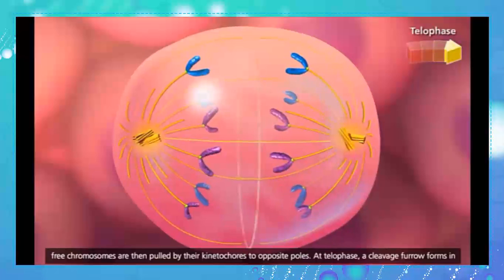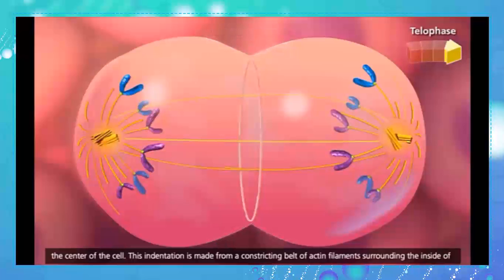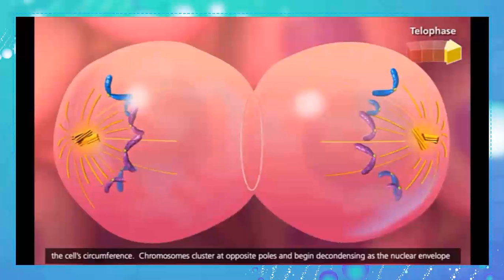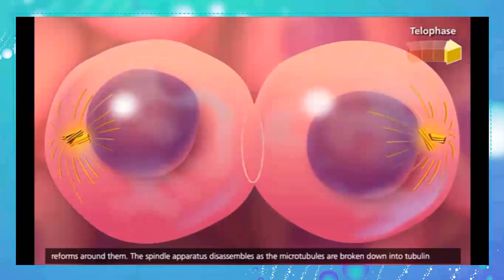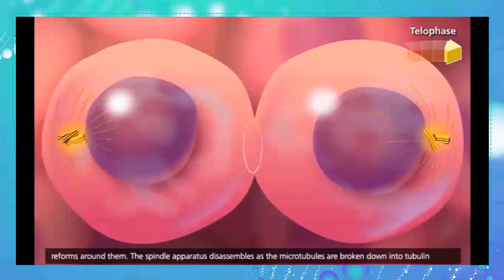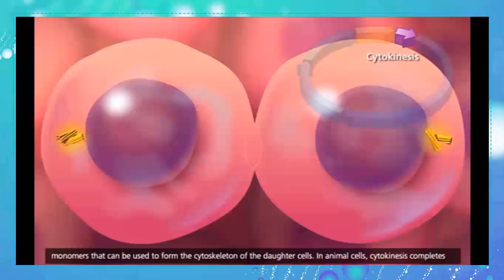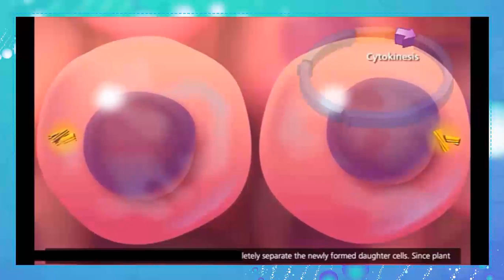At telophase, a cleavage furrow forms in the center of the cell. This indentation is made from a constricting belt of actin filaments surrounding the inside of the cell's circumference. Chromosomes cluster at opposite poles and begin decondensing as the nuclear envelope reforms around them. The spindle apparatus disassembles. In animal cells, cytokinesis completes cell division by extending the cleavage furrow to completely separate the newly formed daughter cells.